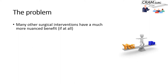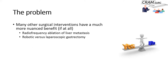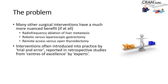However, there are many other surgical interventions with a much more nuanced benefit — if there is benefit at all. Examples include radiofrequency ablation of liver metastasis, robotic versus laparoscopic gastrectomy, and transoral versus open thyroid surgery. Historically, many interventions have been introduced into surgical practice by expert surgeons who reported retrospective studies from centres of excellence showing the interventions are great, and these have found their way into routine surgical practice.